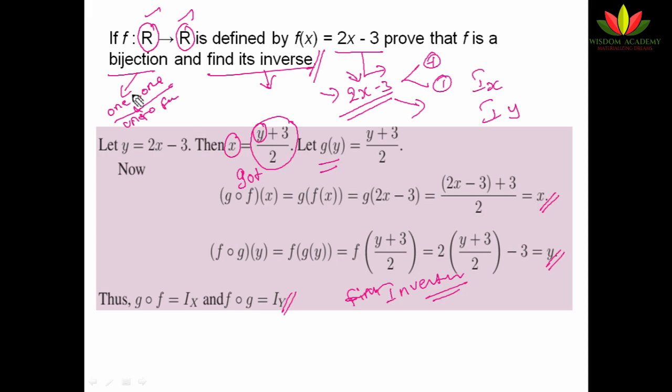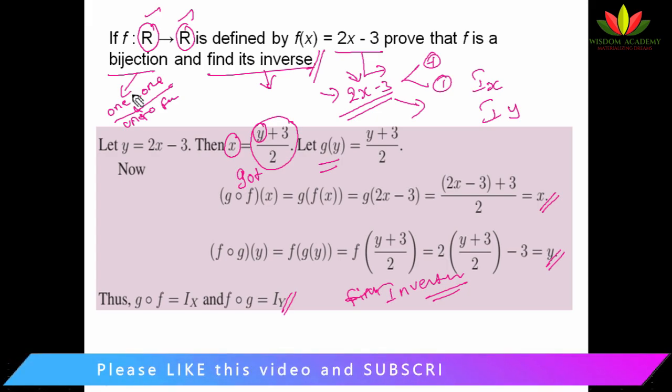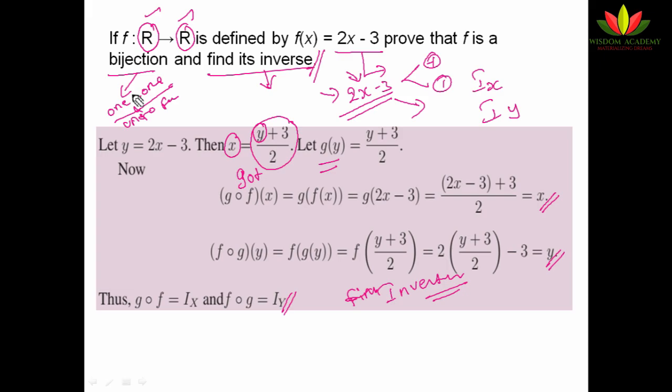So what we saw today is types of functions. The first type was one-to-one function, then many-to-one function, onto function, into function, and bijective function — which satisfies both onto and one-to-one. Then we saw composition of functions and inverse of a function, that is invertible functions. Please keep practicing the sums. Thank you.